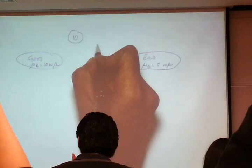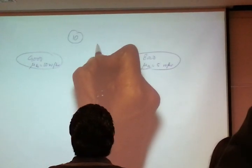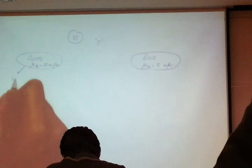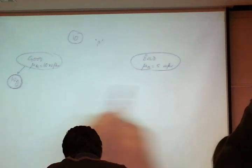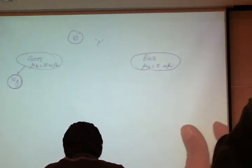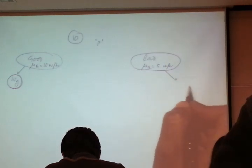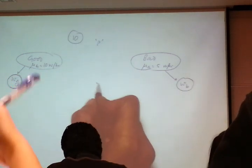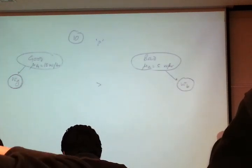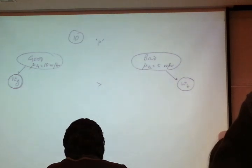The employer's profit margin per widget — revenue minus the cost of raw materials — is P. Now, good workers, if they don't work for this employer, could work elsewhere and receive a wage of WG. This is their reservation wage. WG is greater than WB — what good workers can earn elsewhere is higher than what bad workers can earn elsewhere.